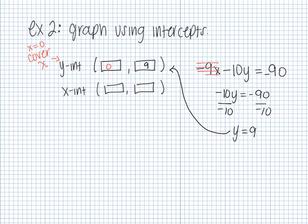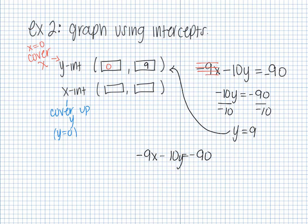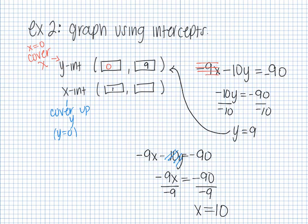For the x-intercept, I cover up the y's, which means I'm making y equal zero. Covering the y in my equation leaves me with negative 9x equals negative 90. Divide by negative 9 and get x equals positive 10. That goes in the x spot, and for the x-intercept y is always zero. You plot those two points in Hawkes and it graphs it for you — plot the y-intercept on the y-axis and the x-intercept on the x-axis.